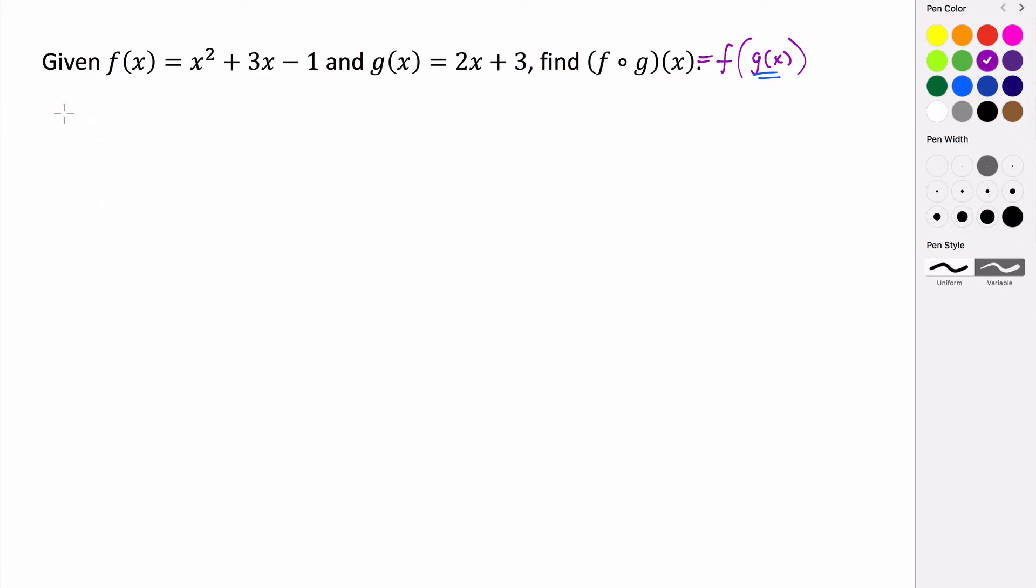So normally if you think about evaluating some function, let's say I want to evaluate f at 3, for example. So if I'm evaluating f at 3, that just means that anywhere that I see the value of x, I replace it with a 3. So it would be 3 squared plus 3 times 3 minus 1.